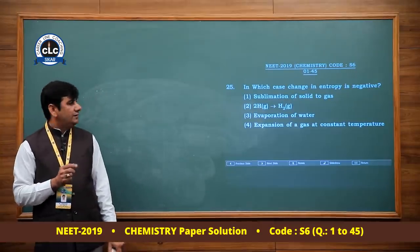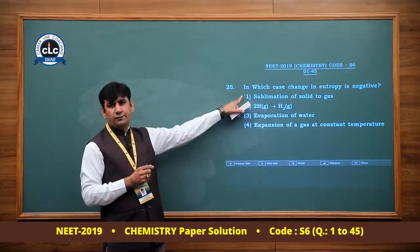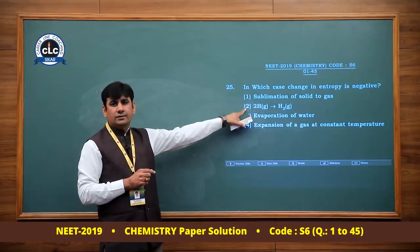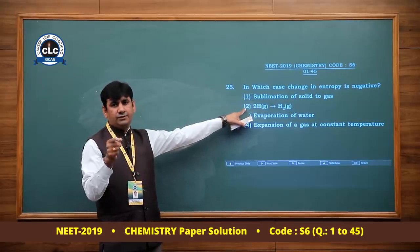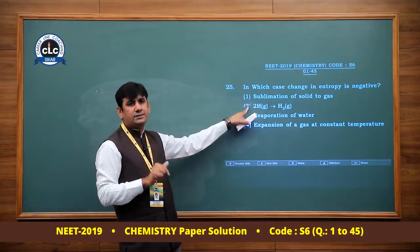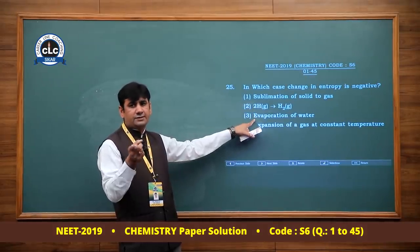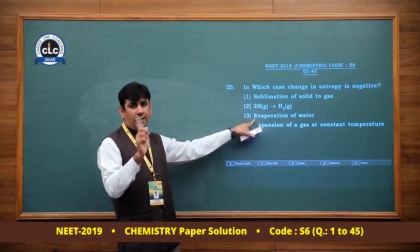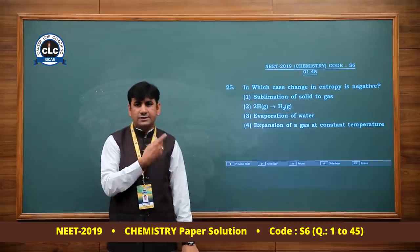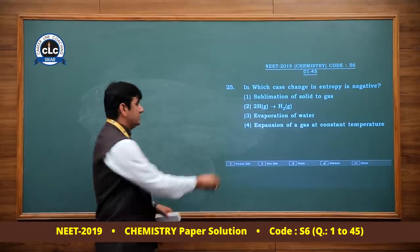In which case is change in entropy negative? Sublimation of solid to gas — entropy increases. Hydrogen atoms converting to hydrogen molecules — number of particles decreases, but entropy increases. Expansion of gas at constant temperature — entropy increases. Option 2 is correct (entropy is negative).